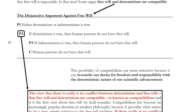Some do reject this premise, and those people are known as compatibilists. What compatibilists argue, as the name suggests, is that despite first appearances, despite maybe our initial intuitions, there's nothing in conflict between free will and determinism. Free will and determinism are compatible, and that means you can be both determined and free.